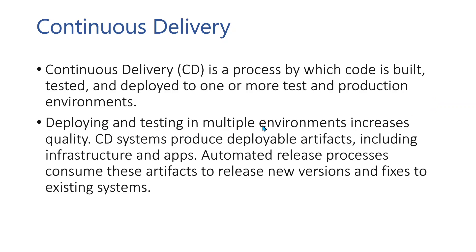Deploying and testing in multiple environments increases quality, because you will be able to find most environment-level bugs and code-level bugs when testing across different environments, which will actually improve the quality of your code. Continuous Delivery systems produce deployable artifacts, including infrastructure and apps. Automated release processes consume these artifacts to release new versions and fixes to existing systems.